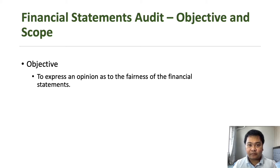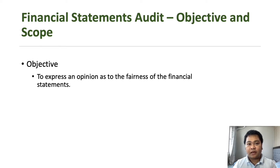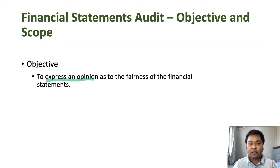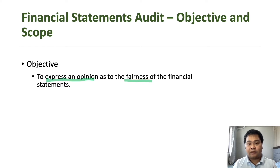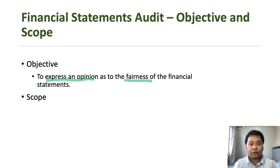The audit of historical financial statements is a type of financial audit. The objective of a financial statements audit is for the auditor to obtain reasonable assurance whether the financial statements issued by management are free from material misstatements, and therefore to express an opinion as to the fairness of the financial statements — whether it is in accordance in all material respects with the applicable financial reporting framework.